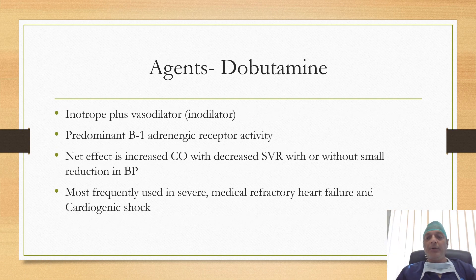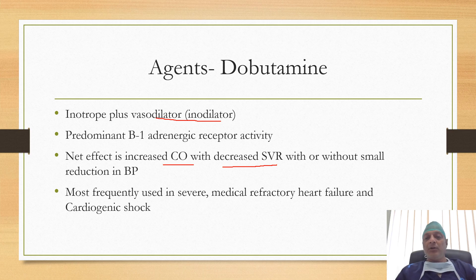Dobutamine is an inodilator, meaning it acts both as an inotropic agent and a vasodilator. The net effect is an increase in cardiac output with a decrease in systemic vascular resistance, so the ultimate effect on blood pressure is either no change or a small reduction. The most frequent use of dobutamine includes severe medically refractory heart failure and cardiogenic shock.